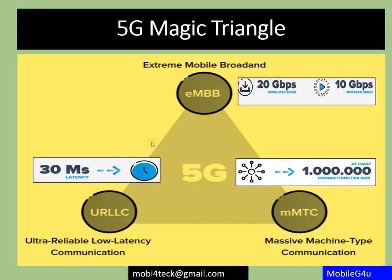This is the magic triangle of 5G. We have three main things: eMBB, URLLC, and MMTC. The first one is eMBB — Enhanced Mobile Broadband. The focus here is to increase speed. You get 20 Gbps in downlink and 10 Gbps in uplink, which is very fast. This section talks about mobile broadband at an extreme level.